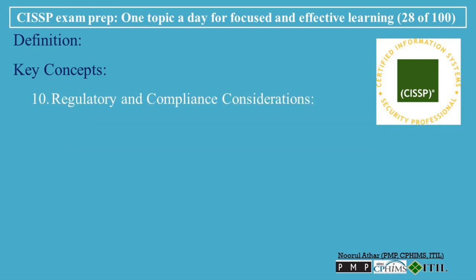Regulatory and Compliance Considerations: Many industries require organizations to conduct a BIA as part of their regulatory obligations. For example, HIPAA requires healthcare organizations to perform a BIA to ensure the continued availability of electronic protected health information, EPHI, during disruptions. PCI-DSS requires organizations that process payment card data to ensure that critical systems are protected and can be restored in a timely manner. ISO/IEC 22301 is the international standard for Business Continuity Management, which includes BIA as a key component of developing a business continuity plan.